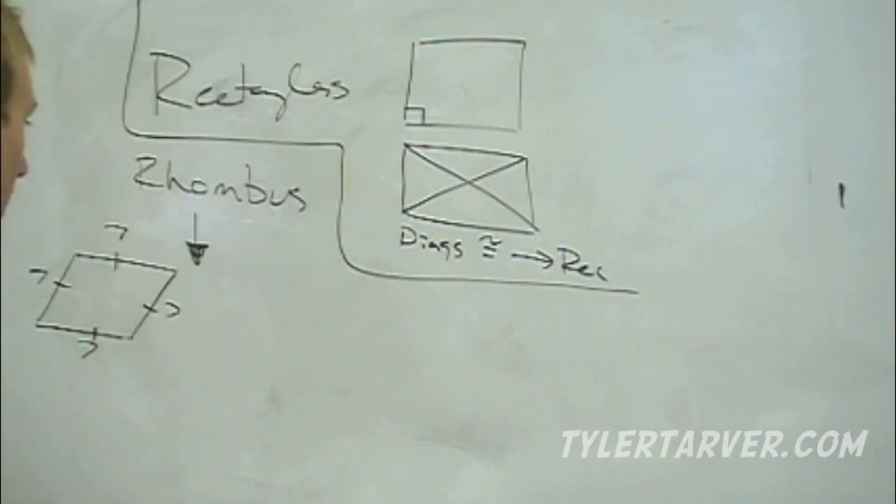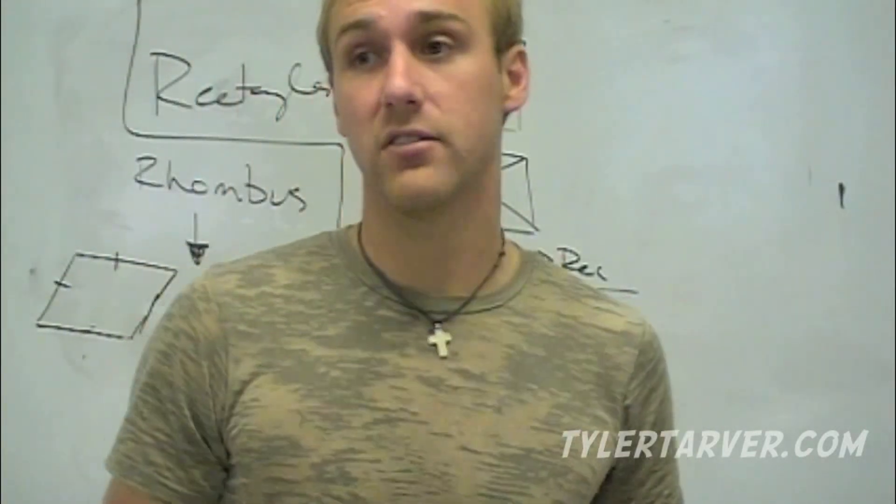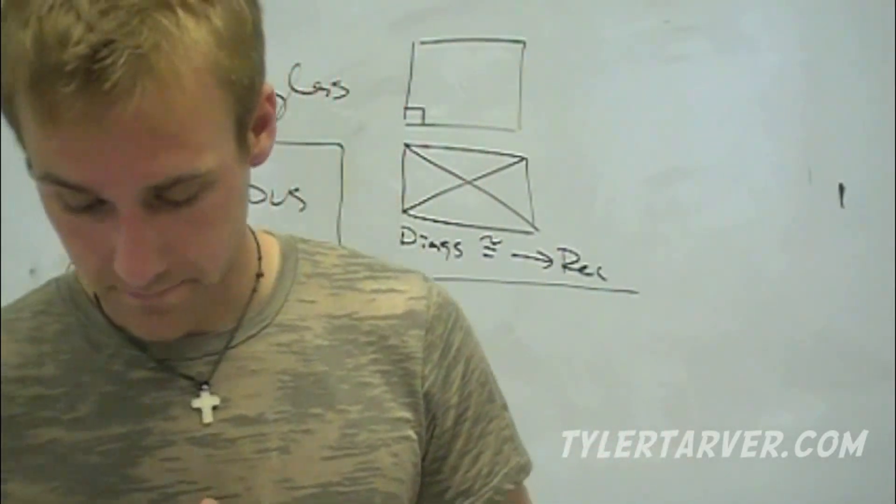So if we know two sides are congruent in a parallelogram that are right next to each other, consecutive is the word, then we know it is a rhombus. Let me say that again without stuttering. If it's a parallelogram and two consecutive sides are congruent, it's a rhombus.